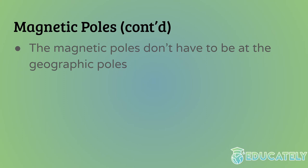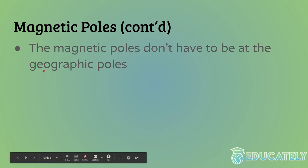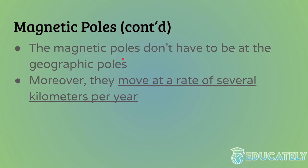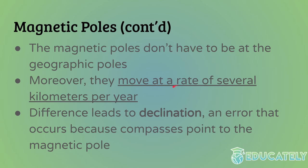The magnetic poles don't have to be at the geographic poles because they're completely different things. The geographic poles are based on where Earth's axis of rotation intersects the surface, while the magnetic poles are where the magnetic field digs into the planet. Also, the magnetic poles move at a rate of several kilometers per year, whereas the geographic poles barely move — at most a few centimeters per year or per decade.